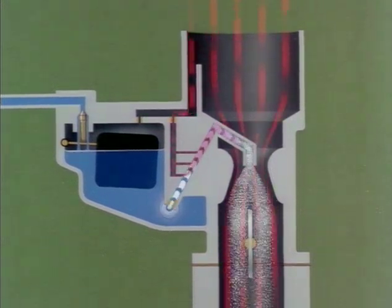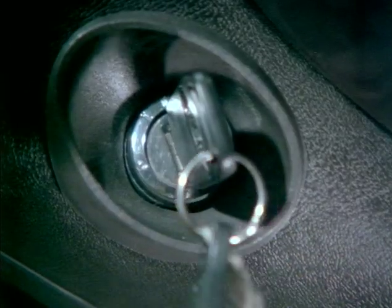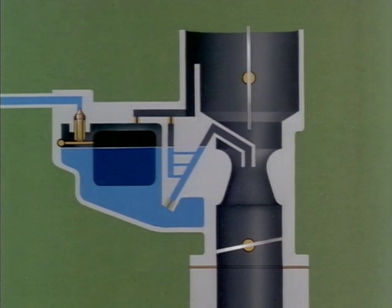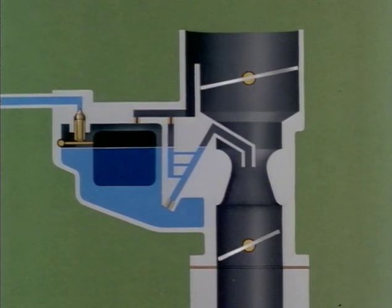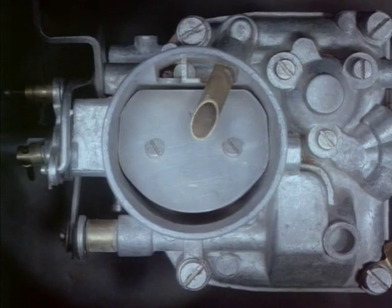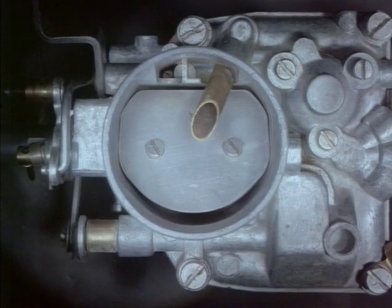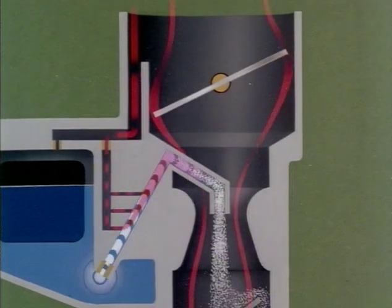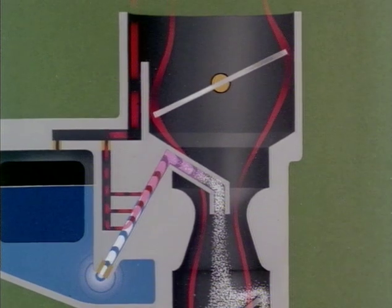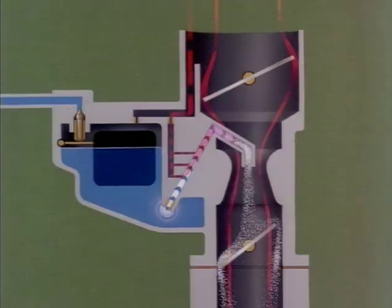When starting from cold, a richer mixture is needed. Here the choke plays its part. To start the engine, the choke is closed, which slightly opens the throttle. The choke valve allows very little air to pass, so when the engine is turned over, the suction acts mainly on the fuel jet, and together with the small amount of air, produces a richer mixture for starting when cold.